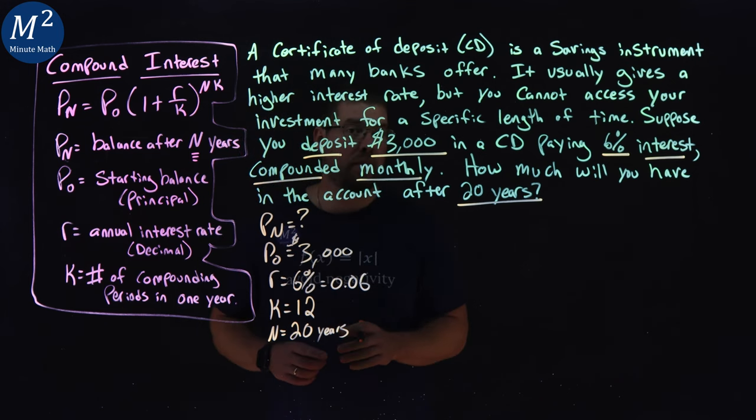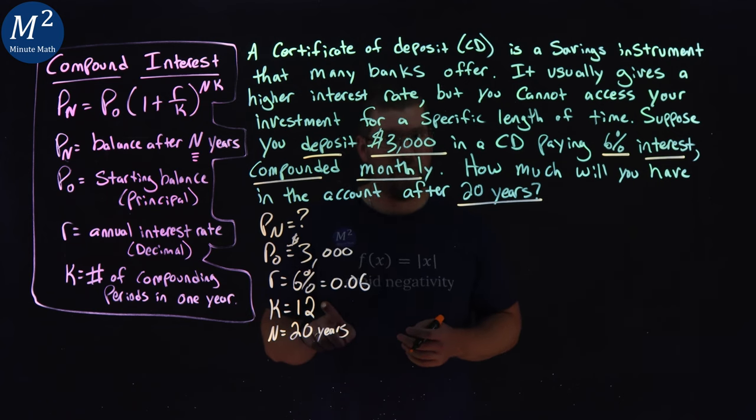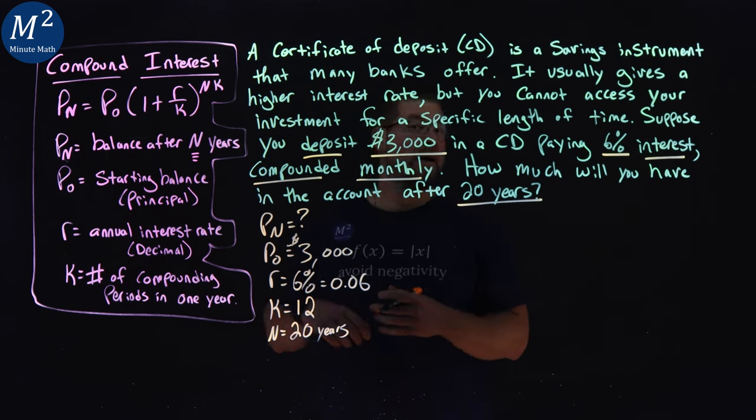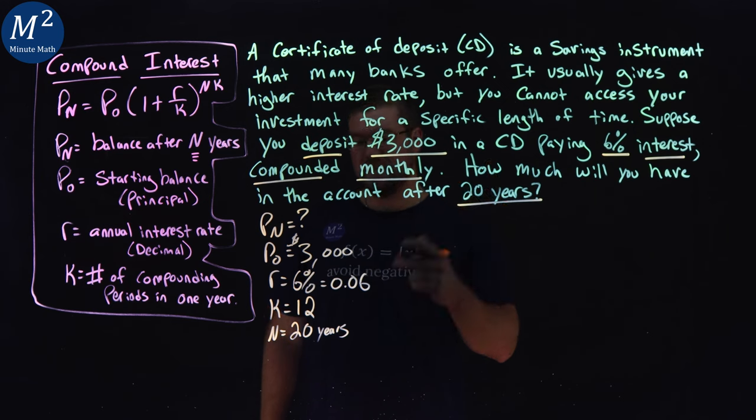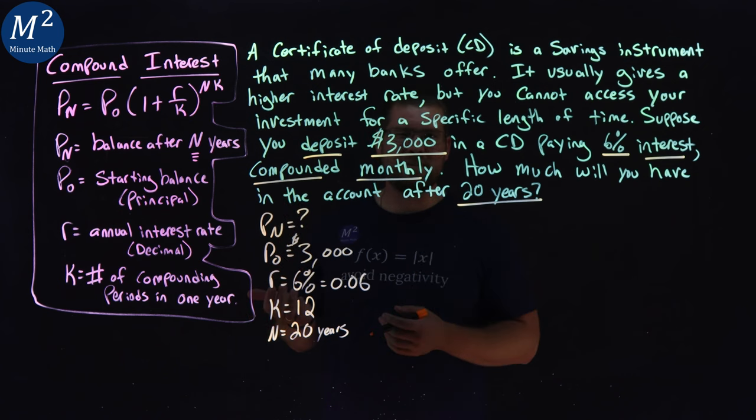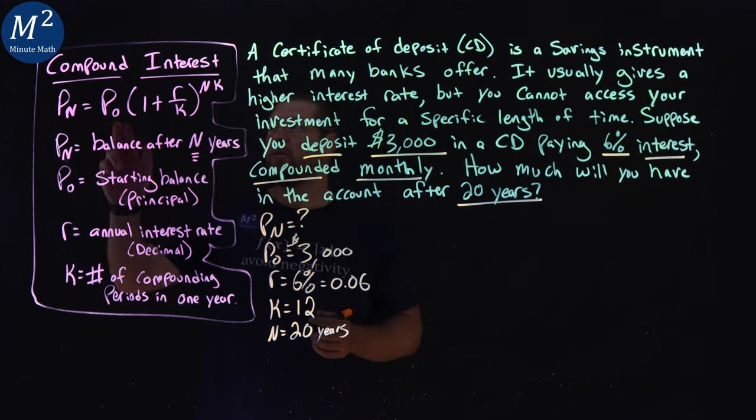Just for the record, if you're compounding quarterly, there's four quarters in a year, that would be a 4. If we're compounding semi-annually, that's twice a year, it would be a 2 there. And if it's compounding annually, that only happens once a year, that'd be a 1, just so you know. And those are the common ones. Oh, daily would be 365, 365 days in a year. Alright.